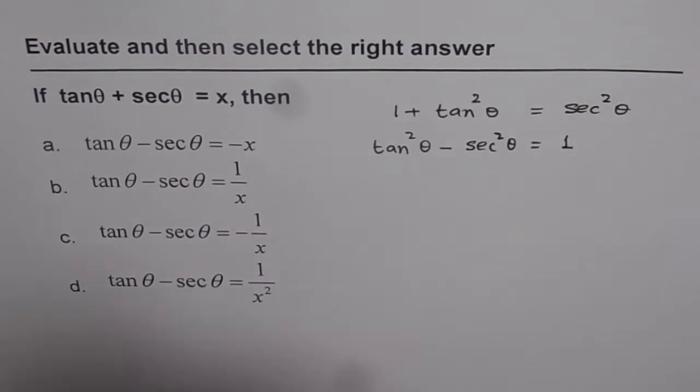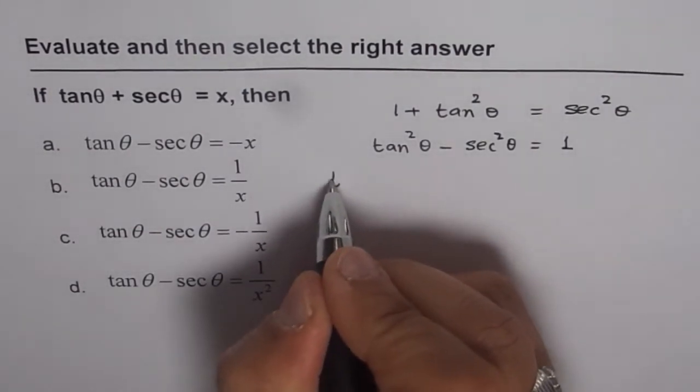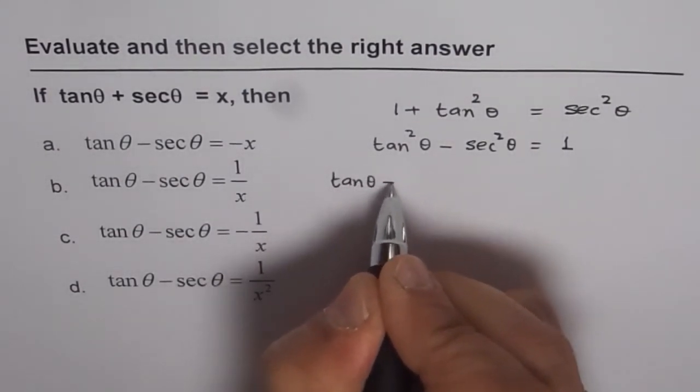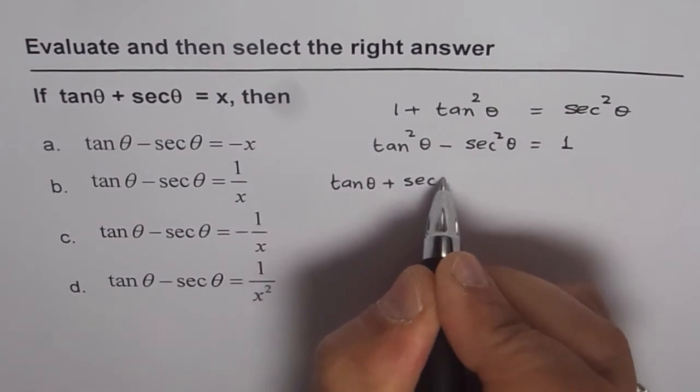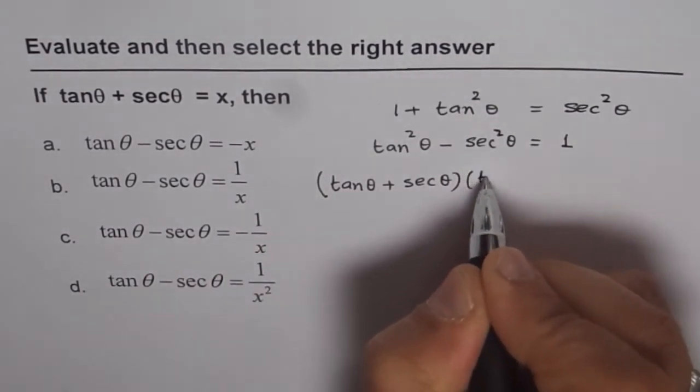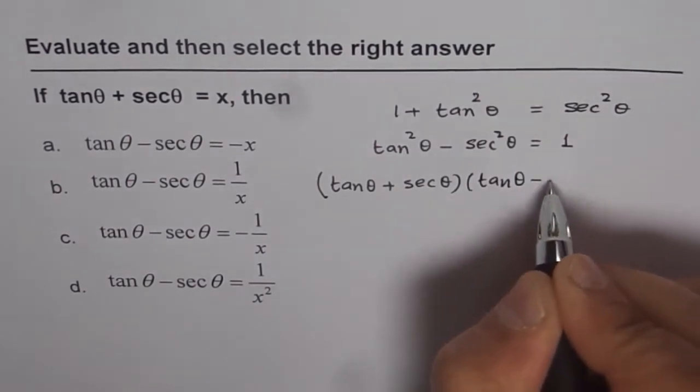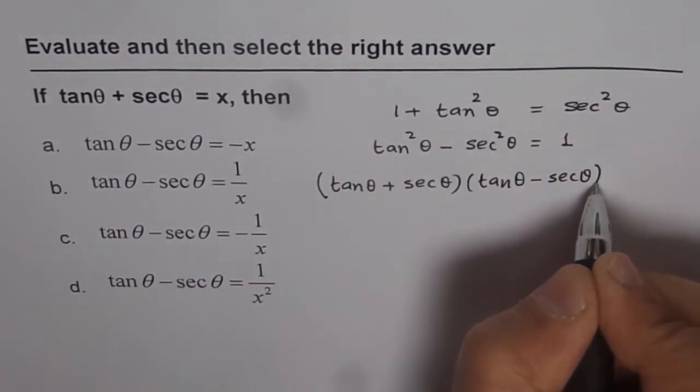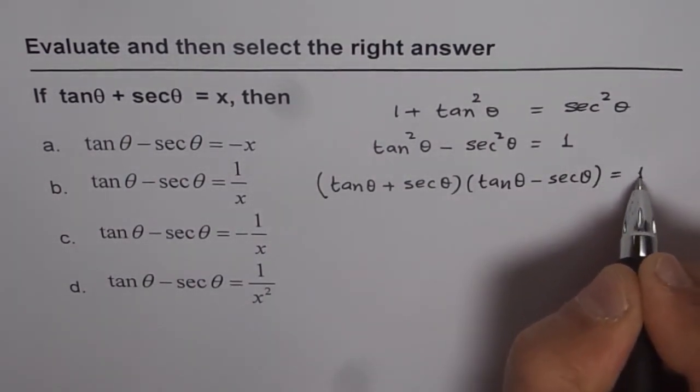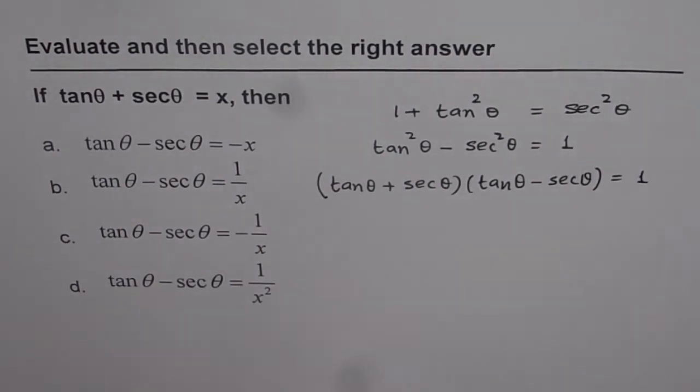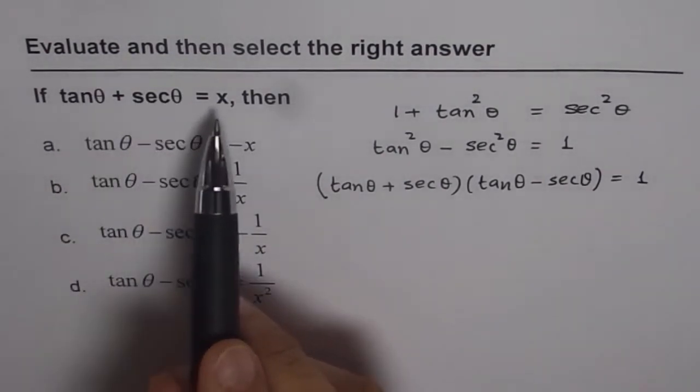Now this is the difference of squares, so I can write this as tan theta plus secant theta times tan theta minus secant theta equals to 1. Now what we are given is that tan theta plus secant theta is x.